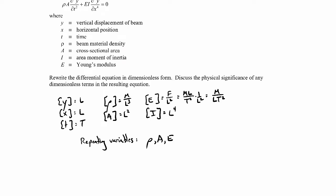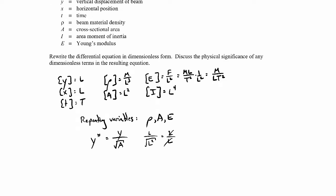Let's go ahead and make the non-repeating variables dimensionless using the repeating variables. For example, to make y dimensionless I'm going to call it y star, and that would be made dimensionless by dividing by the square root of the area. The numerator would be length, the denominator would be the square root of length squared, so length over length — that makes it dimensionless. We can do the same thing for x.